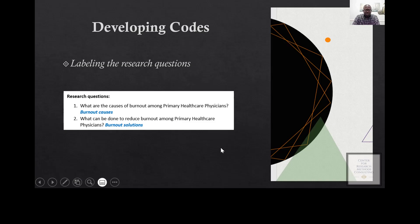Based on the example that we have, the first research question focuses on the causes of burnout, so you can just label it as 'burnout causes.' And the second one will be 'burnout solutions.' This is just to remind you about the research question that you are addressing.